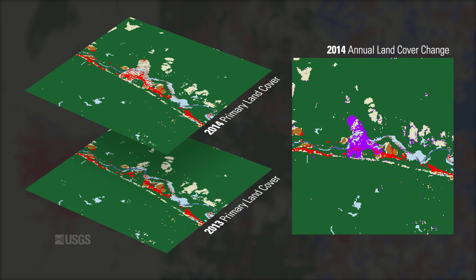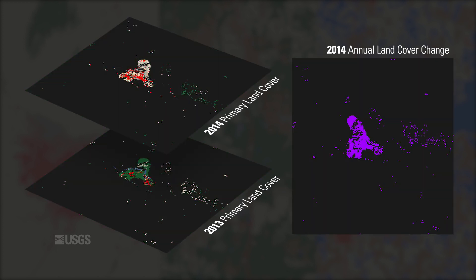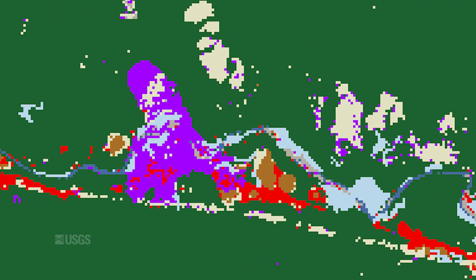Land cover change for a given year is synthesized from the primary land cover product by comparing land class values to those of the previous year. In this example, many pixel values did not change between 2013 and 2014. The pixels that did change appear as purple in the annual land cover change product. But annual change does not happen uniformly.